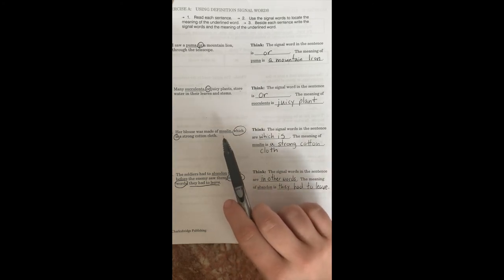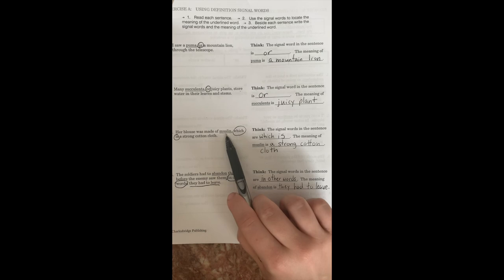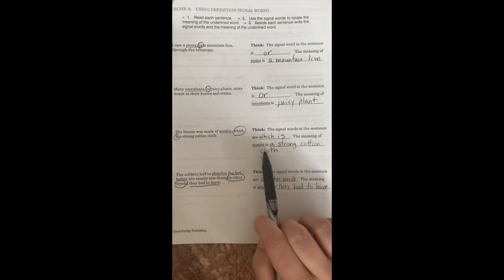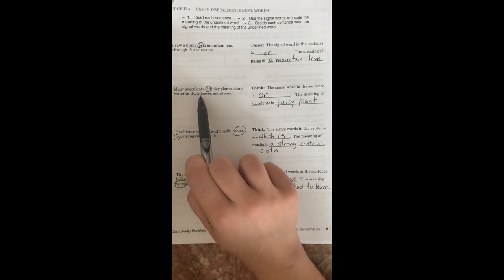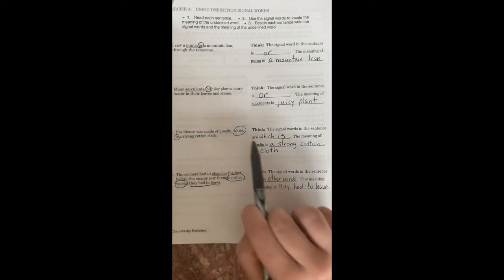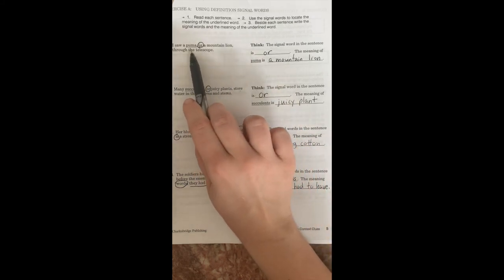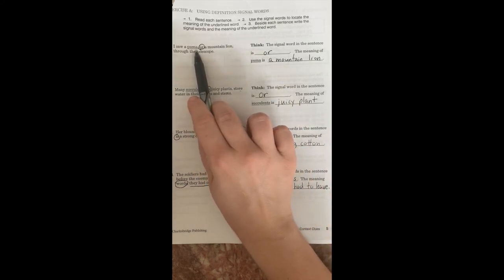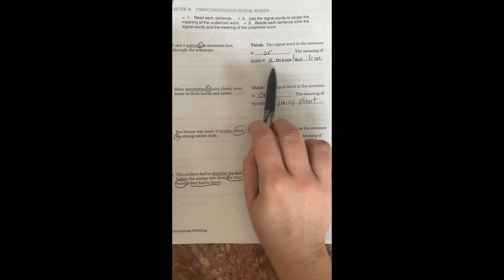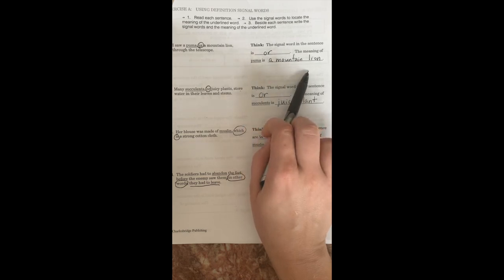We can now guess from our context clues that muslin means a strong cotton cloth. We can now guess that succulents probably means a juicy plant. And that a puma can also be called a mountain lion. Awesome.